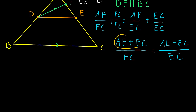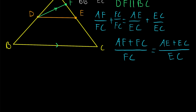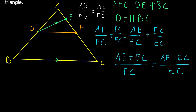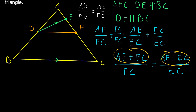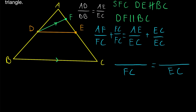Now, remember: AF plus FC is simply the whole segment AC, and AE plus EC is also the whole segment AC. So we can replace both numerators with AC, giving us AC over FC equals AC over EC.